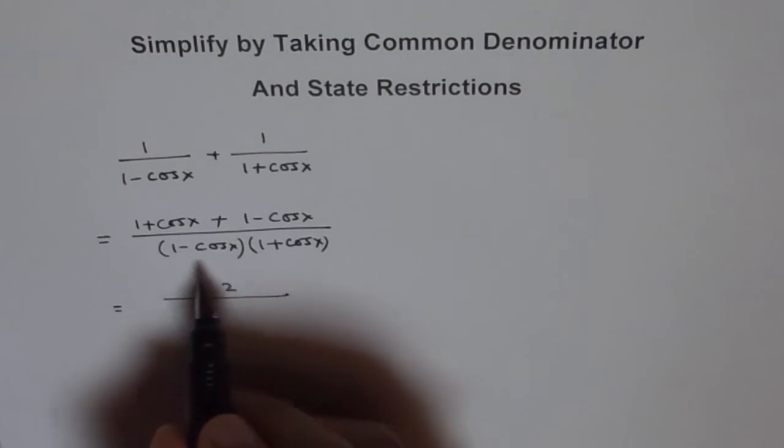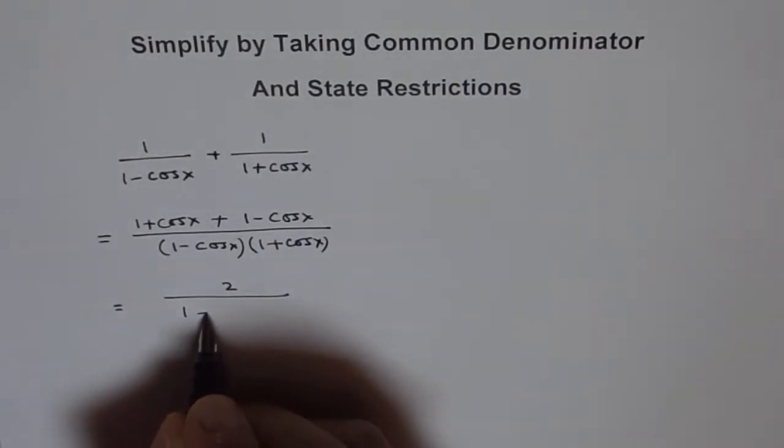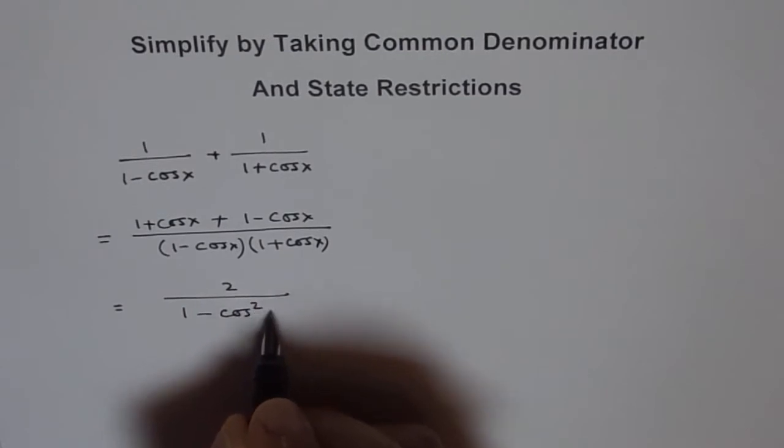And in the denominator, this is like a minus b times a plus b. So we get difference of squares. We will get 1 square minus cos square x. We get 1 minus cos square x.